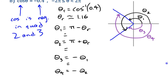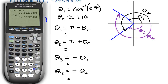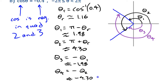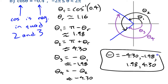So our four angles are approximately negative 4.30, negative 1.98, 1.98, and 4.30. There are four angles in that domain that work for the given information.